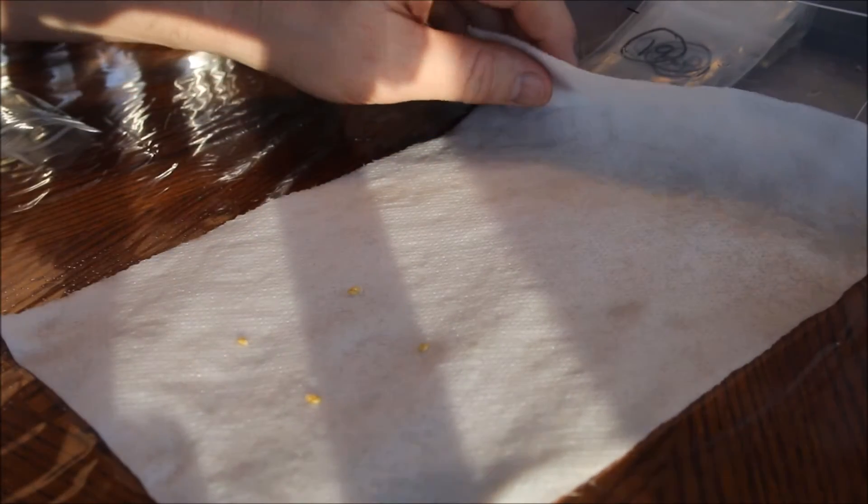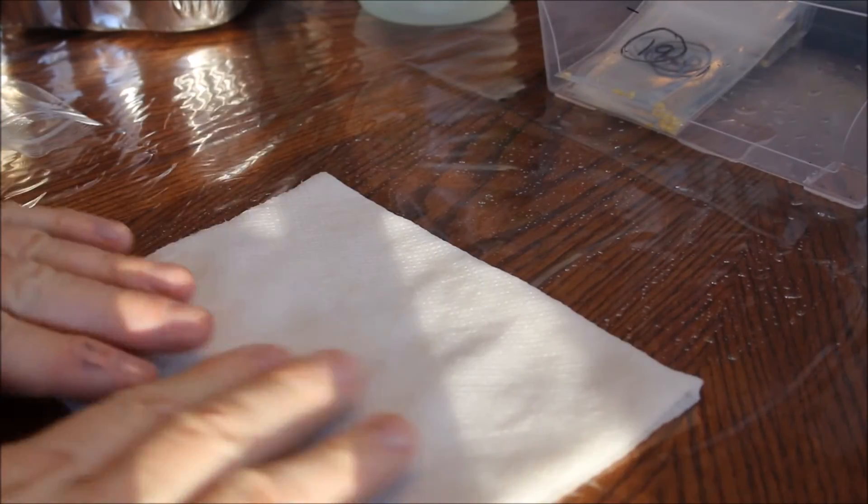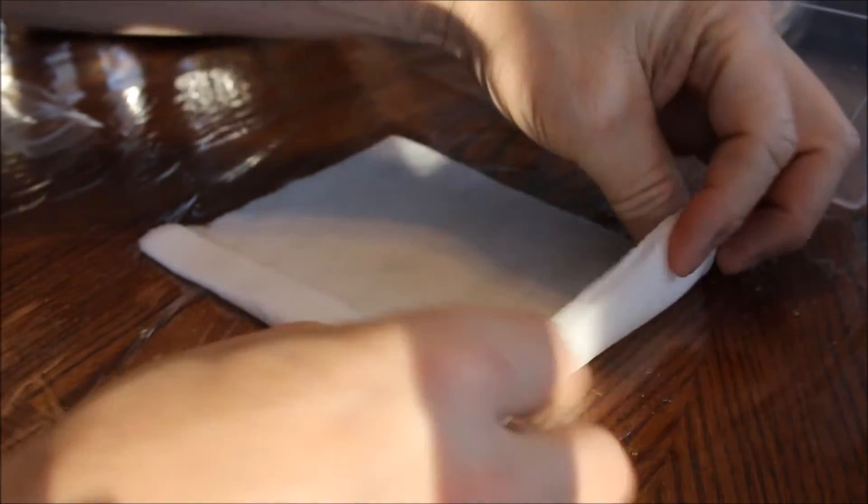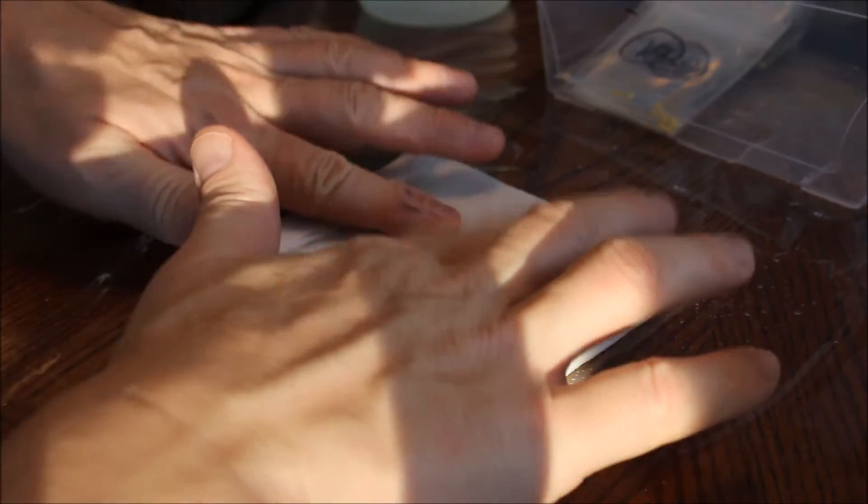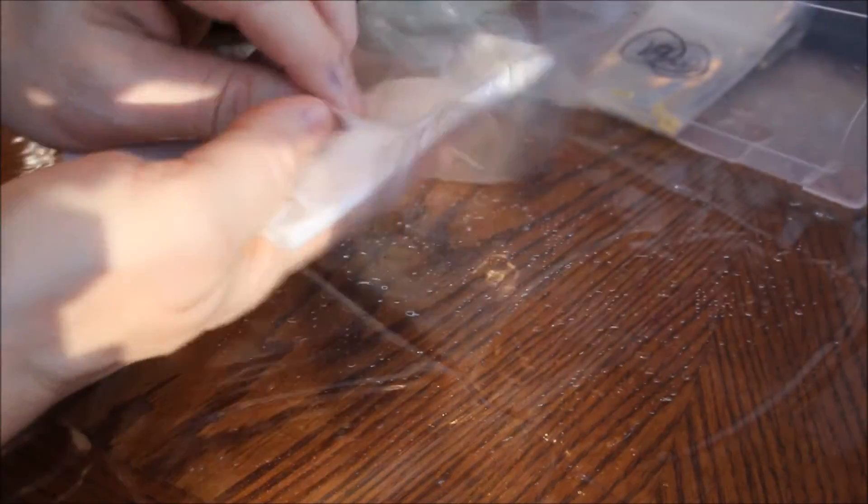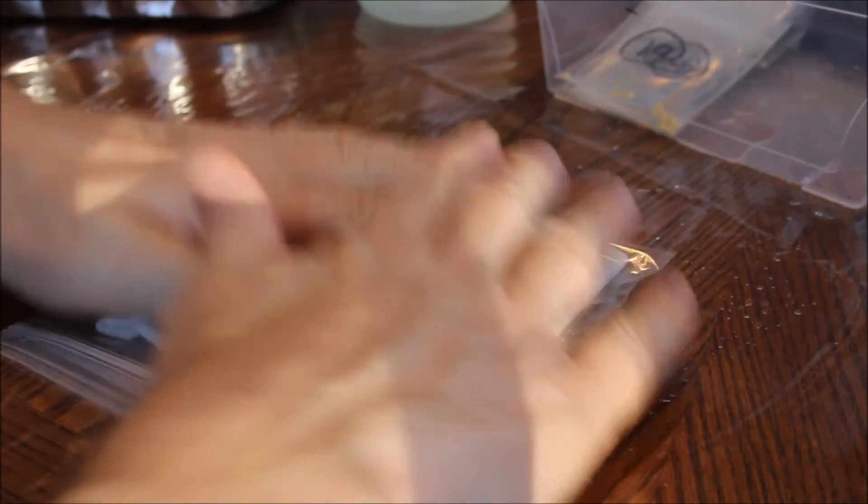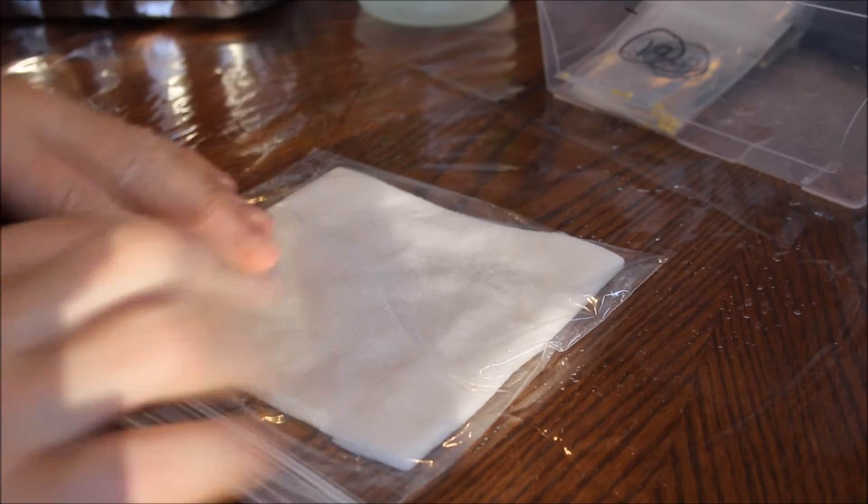So then all I'm going to do is fold this in half. Making sure everything stays nice and moist. Fold up the corners of the loose ends. Okay so then just take yourself a ziplock bag. Put this inside. Flatten it out. And close up the ziplock.